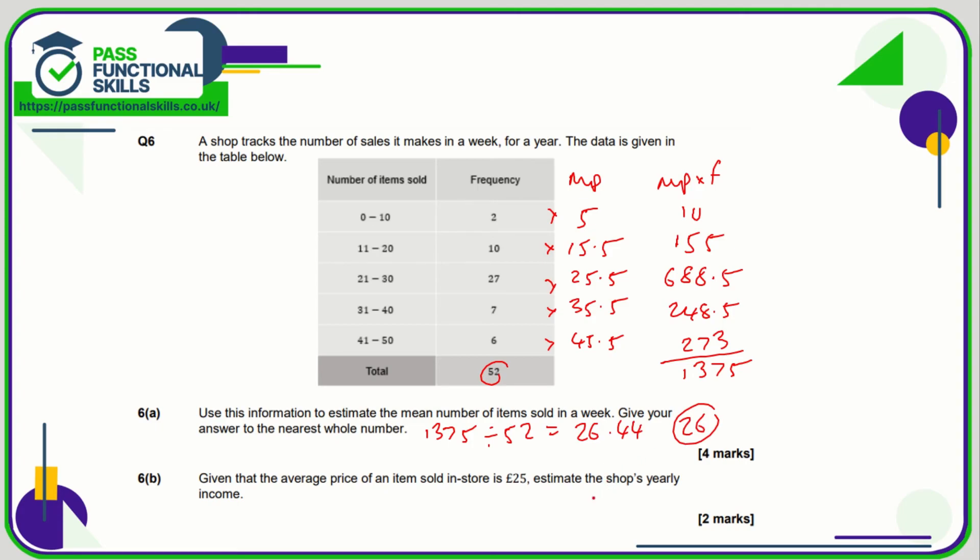So what we need to do now is we've estimated that, well first of all we're told that the average price is 25 pounds per item. So how many items were sold in total? Well that is this figure here, although it's an estimate because again we don't know exactly how many. We just know that it's somewhere between zero and ten, so we're assuming it's five. So we're going to multiply 25 pounds by 1375 items, and that comes to a total of 34,375 pounds.